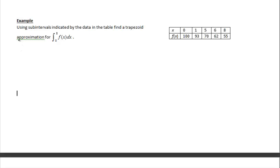We're going to take a look at this next example. We have data in a table. We're going to find our trapezoid approximation. Real important to pay attention to the integral. An approximation for the integral from 0 to 8. So paying attention to 0 to 8, that would capture all of the data points right here.